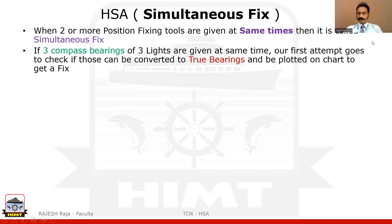In this question, three compass bearings of three different lighthouses were given at the same time, making it a simultaneous fix. My first attempt should be to check if I can convert them into two true bearings and plot directly on the chart. Important: only true bearings can be plotted — not compass, gyro, or magnetic. So you must always convert to true bearings first.